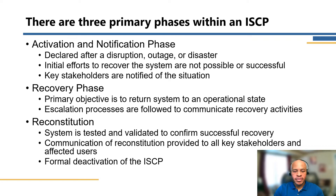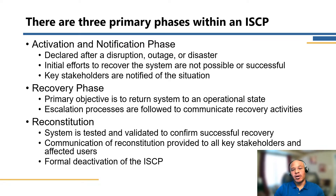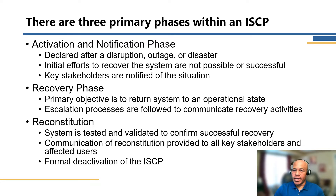Here we have the three primary phases of an ISCP. The first is activation and notification. This phase is activated when a system is determined to not be able to recover within its recovery time objective — whatever that defined time frame is, whether eight hours, twelve hours, twenty-four hours, and so on.